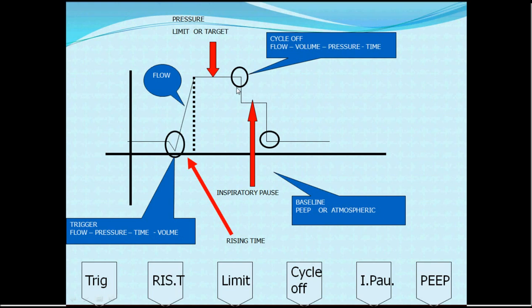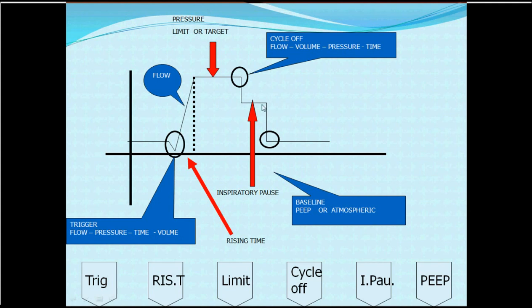After cycle termination, the inspiratory limb is closed. The expiratory limb may be kept closed for a period — this is called an inspiratory pause. During the pause, both limbs are closed and there is no movement of air, producing a drop in pressure. This allows measurement of the plateau pressure — the pressure in the alveoli due to inflation. After that, the expiratory valve opens, and there is exhalation of the tidal volume, returning to functional residual capacity or above it — the PEEP level.